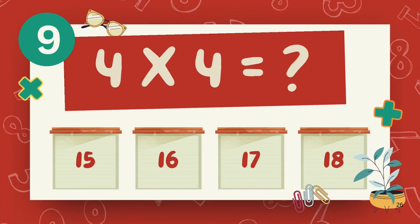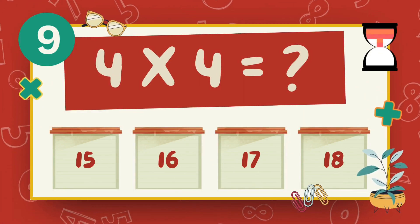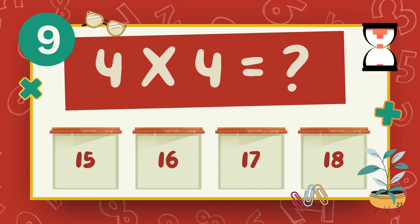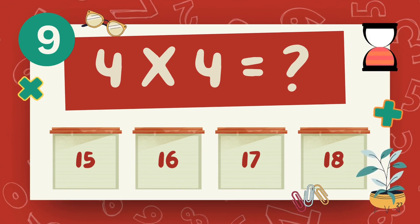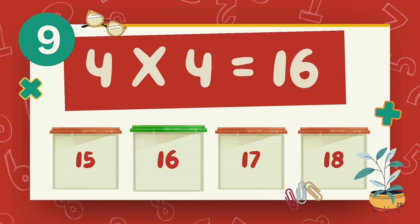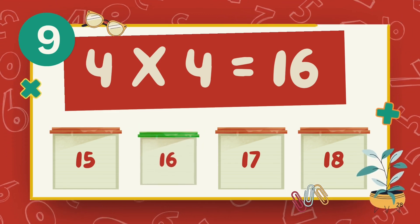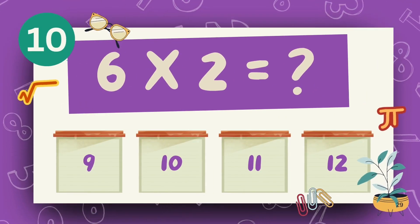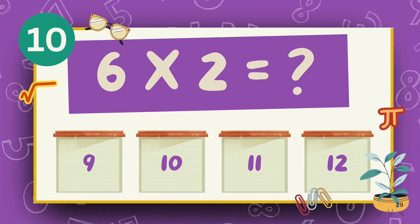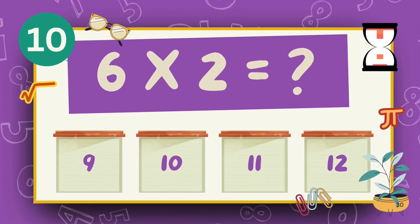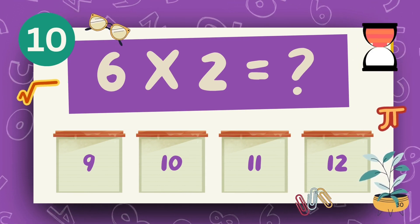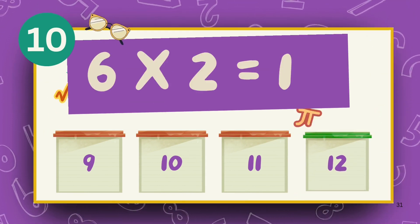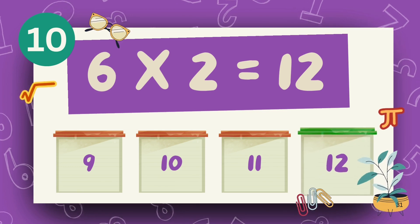What is 4 multiply 4? The answer is 16. What is 6 multiply 2? The answer is 12.